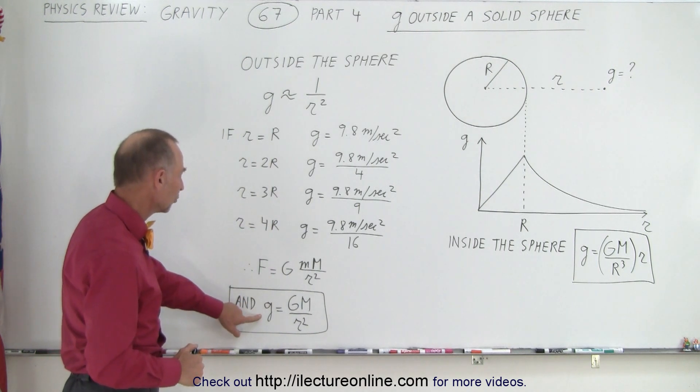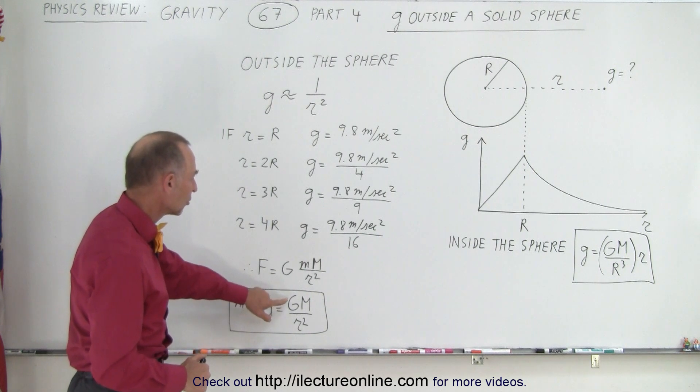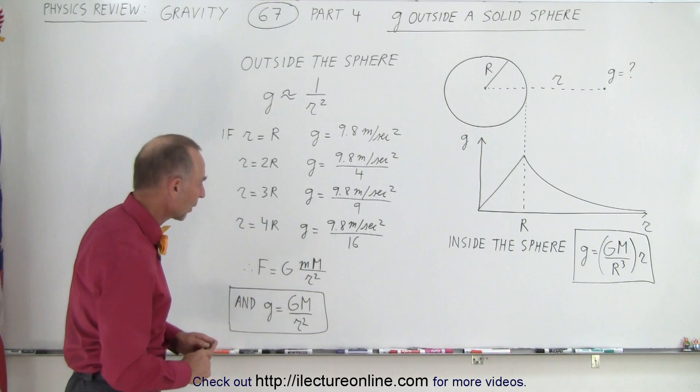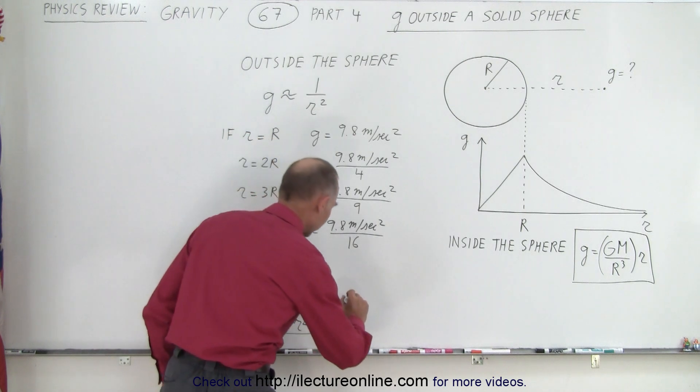And the acceleration due to gravity then simply becomes g m over r squared, or of course you can write it as follows.